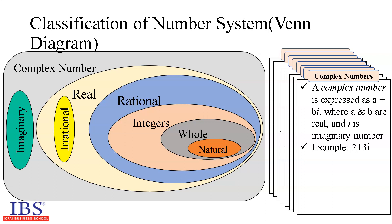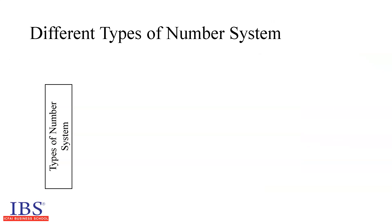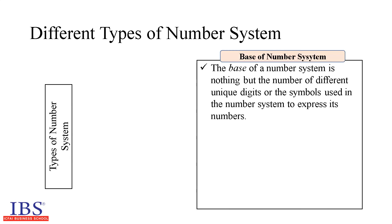The classification of numbers discussed earlier in the Venn diagram has been explained with the decimal number system. There are other number systems too. In this section, let us have a look at different types of number systems. Before we visit them, let us understand the concept of the base of a number system. The base is the number of different unique digits or symbols used in the number system to express its numbers.